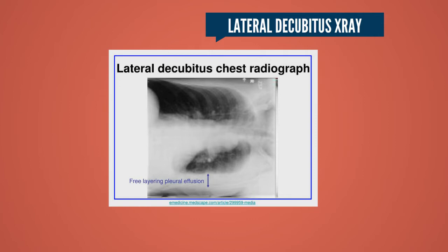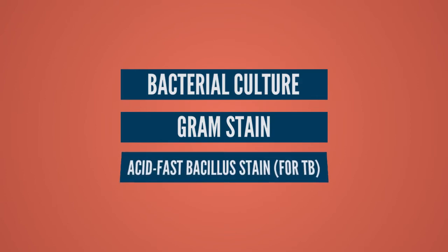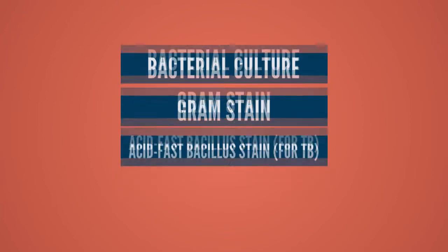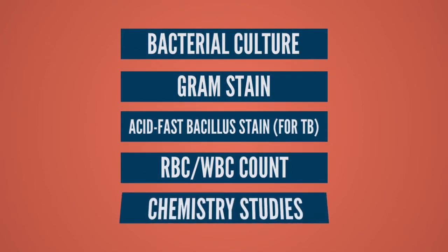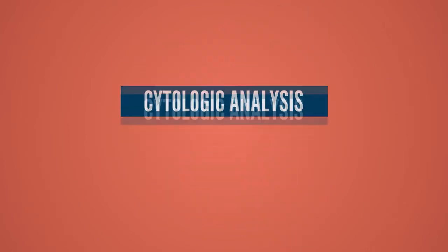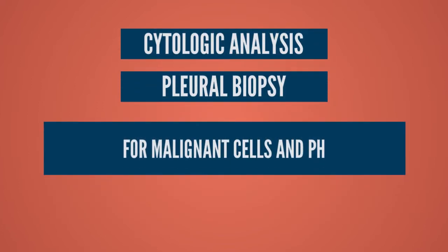Pleural fluid is analyzed by bacterial culture, gram stain, acid-fast bacillus stain for ruling out tuberculosis, red blood cell and white blood cell counts, and chemistry studies. Cytologic analysis and pleural biopsy are also done to check for malignant cells and pH.